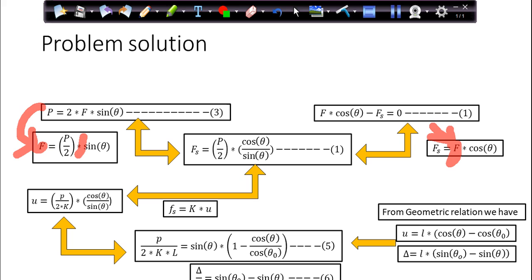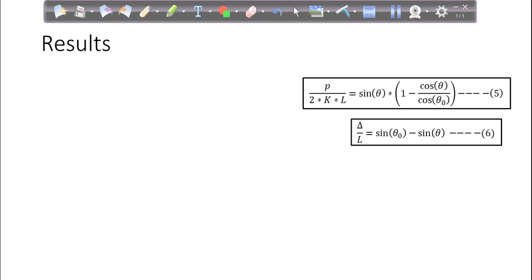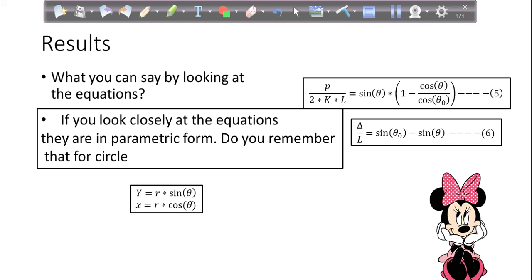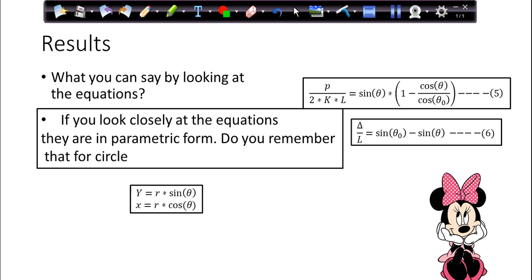So what you can say by looking at the equations? Because these are the final ones that we have got. So definitely that means they are telling you something. Equation speaks. So if you closely look at the equations, they are in parametric form. Remember? If you remember, like for a circle, you know that x equals R cos theta and y equals R sin theta. These are the simple parametric circle equations that you know. So it simply means that if you are going to plot these equations, what you will get is the variation of result, how your parameters are varying.